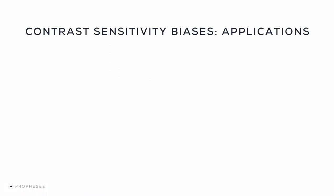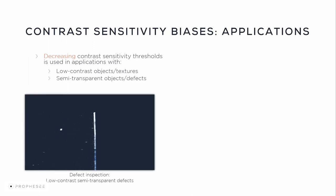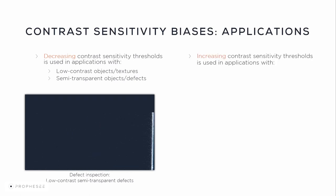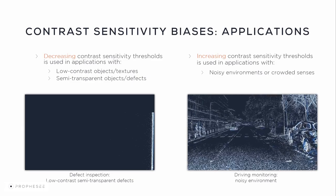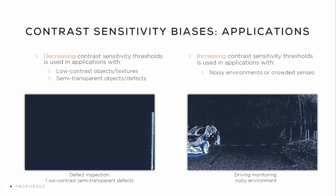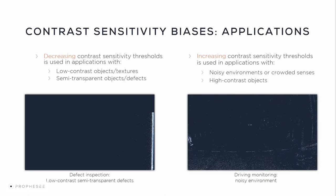Looking at contrast sensitivity biases in various applications: decreasing contrast sensitivity thresholds to improve pixel sensitivity is used in applications with low contrast objects or textures, semi-transparent objects or defects — like semi-transparent low contrast defects on a surface. Increasing contrast sensitivity thresholds to decrease event rate is used in applications with noisy environments or crowded scenes, like a city with loads of details, or when you have high contrast objects.